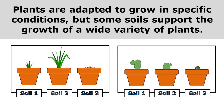Plants are adapted to grow in specific conditions, but some soils support the growth of a wide variety of plants. Some plants are adapted to grow in sandy soils that don't hold a lot of water. Other plants are adapted to grow in soils like clay that holds onto lots of water. But when we get potting soil, that's usually a form of loam, which just means it's a mixture of lots of different types of soils, and so because it's a mixture of different types of soils, it can support a variety of plant growth.